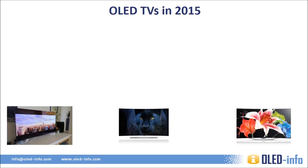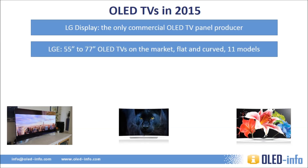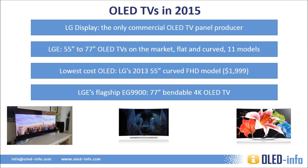Currently, the only company that produces commercial OLED TV panels is LG Display. The company's main customer is LG Electronics, which is offering 11 OLED TV models ranging from 55-inch to 77-inch, in both flat and curved versions. The lowest-cost OLED on the market is LG's 55-inch curved Full HD model, which costs around $2,000 in the US. The flagship TV is the EG9900, which is a 77-inch bendable 4K OLED TV that will be released soon, with a price tag probably over $30,000.